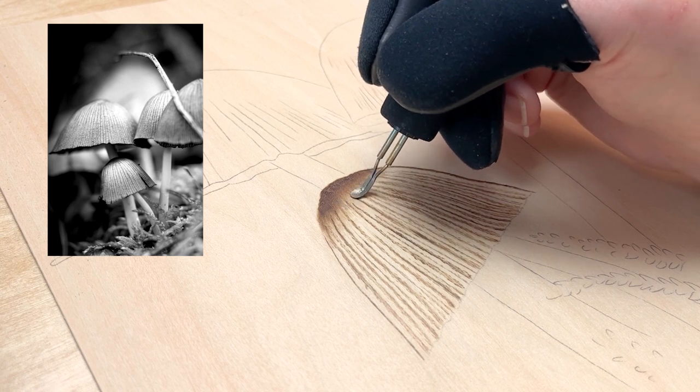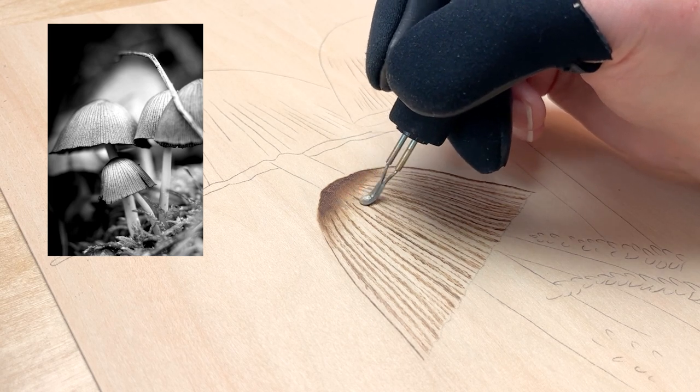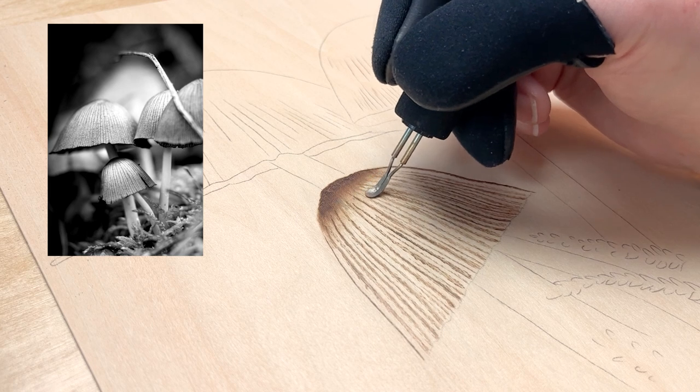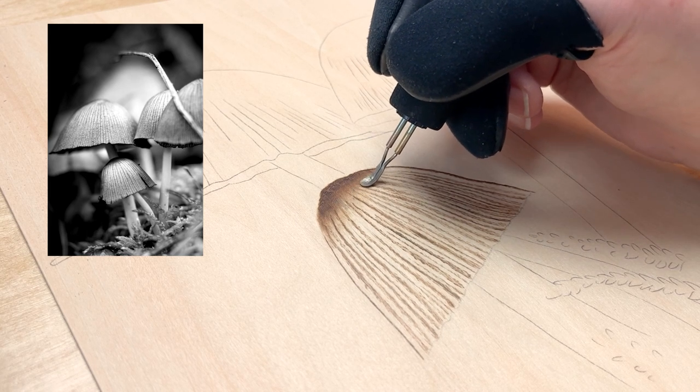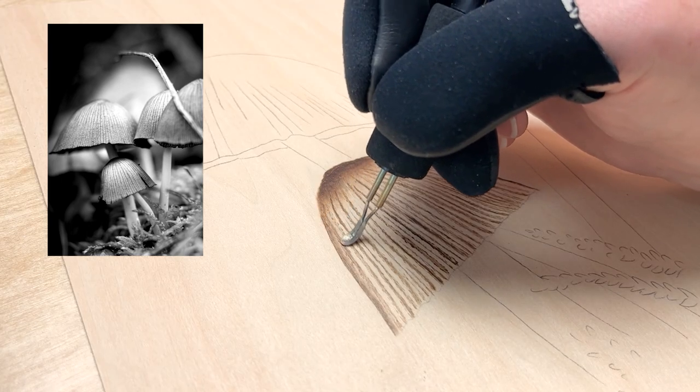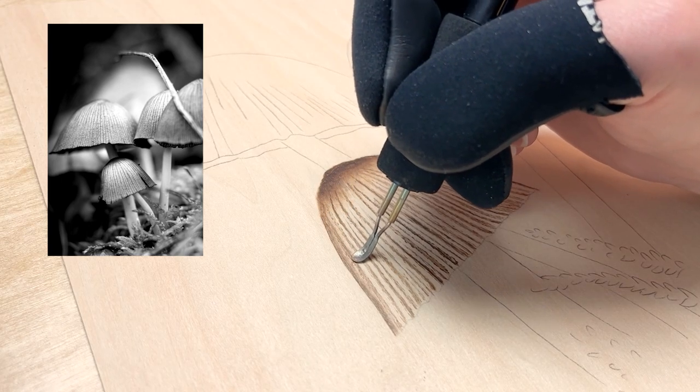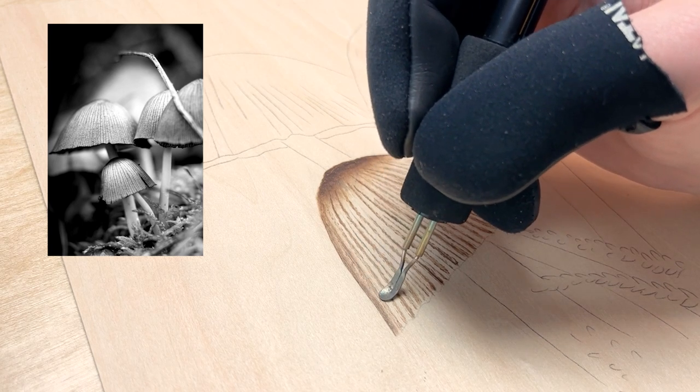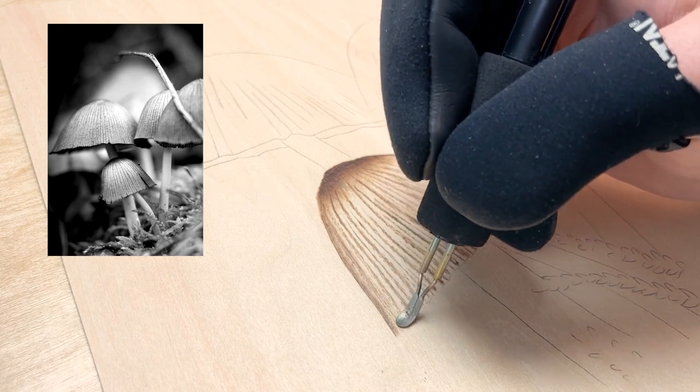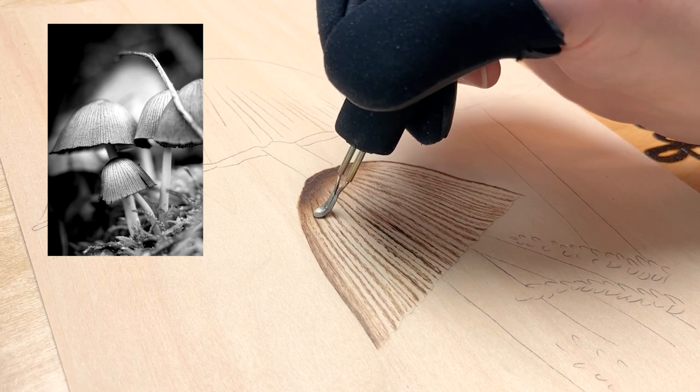I'm going to start at the top where it's really dark. You can see in the photo the top of the mushroom is super dark, then it's got a nice bright spot where the light is shining on it, and then it fades to a medium tone at the bottom. I'm going to pay attention to all these tonal values and try to replicate that as closely as I can.